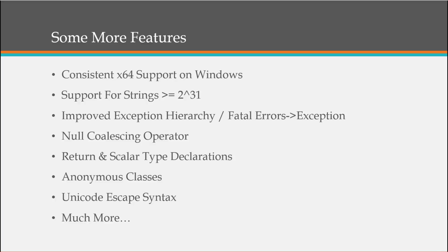Some other features we'll get to later in the course: consistent 64-bit support on Windows, support for strings greater than or equal to 2 to the power of 31, improved exception hierarchy, fatal errors and exceptions, the null coalescing operator, scalar type declarations, anonymous classes, and Unicode escape syntax. There's also much more, but these are the main things we'll be covering.